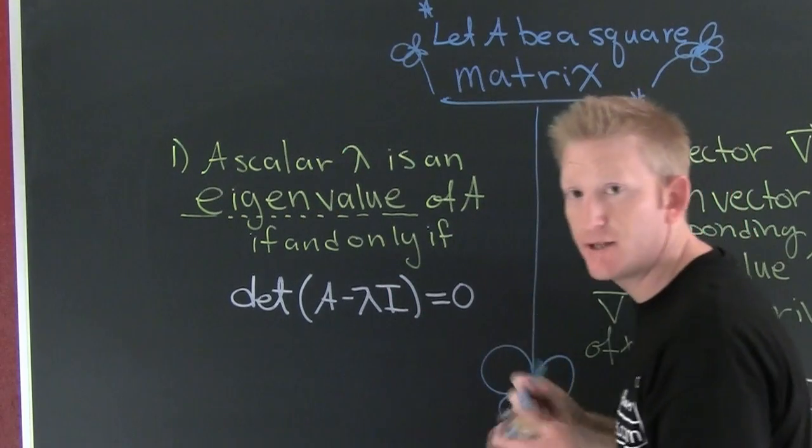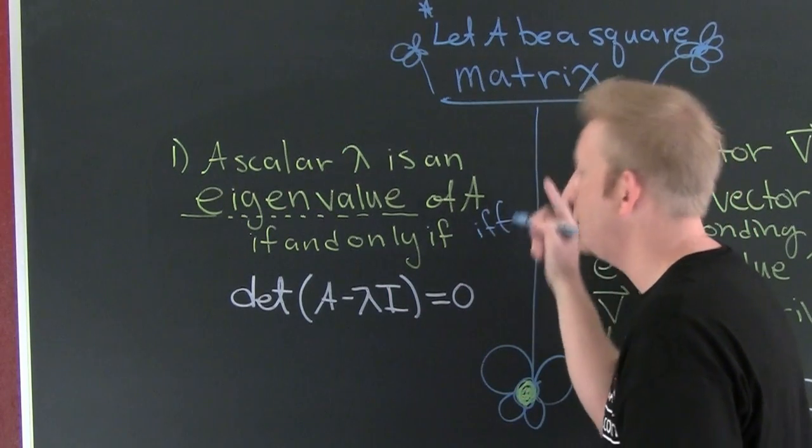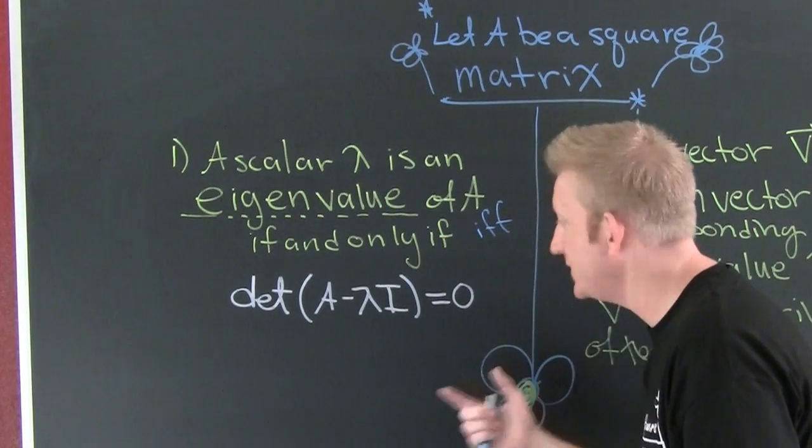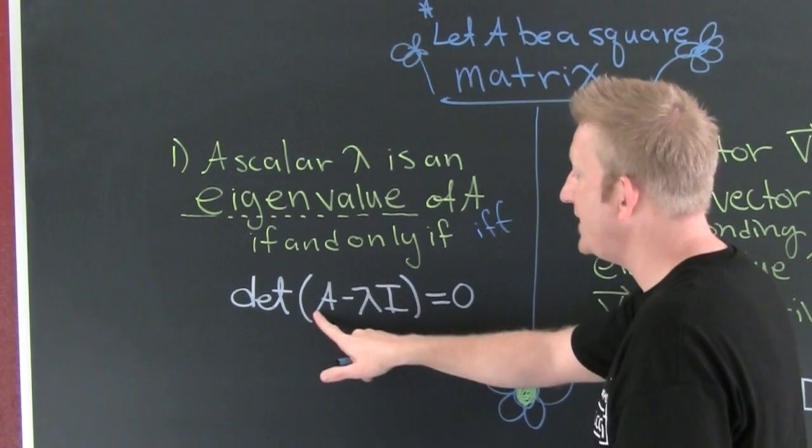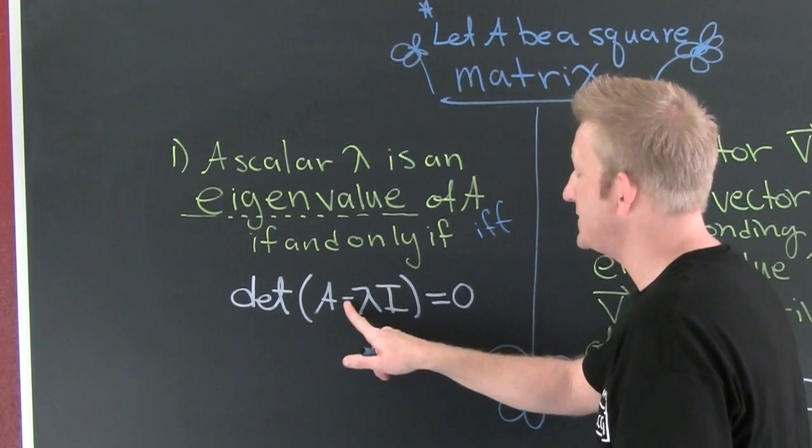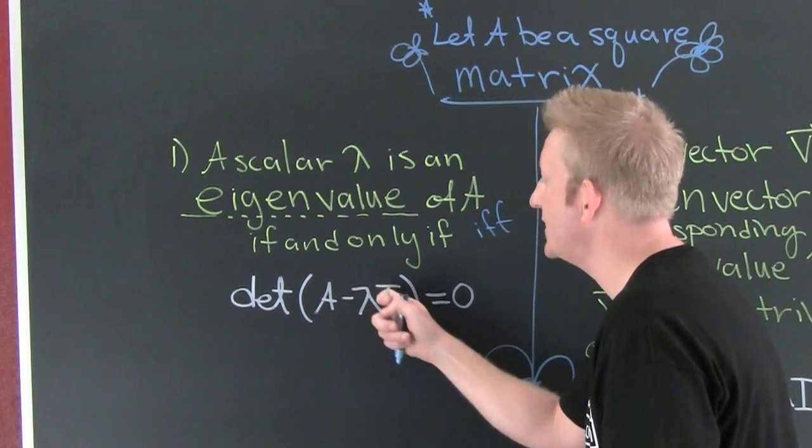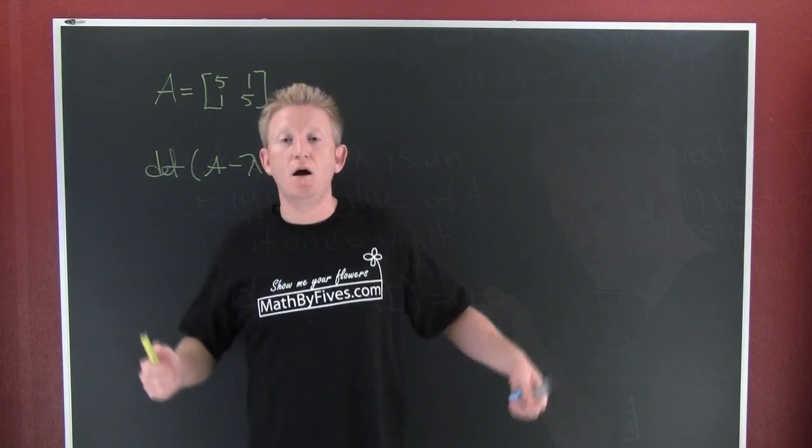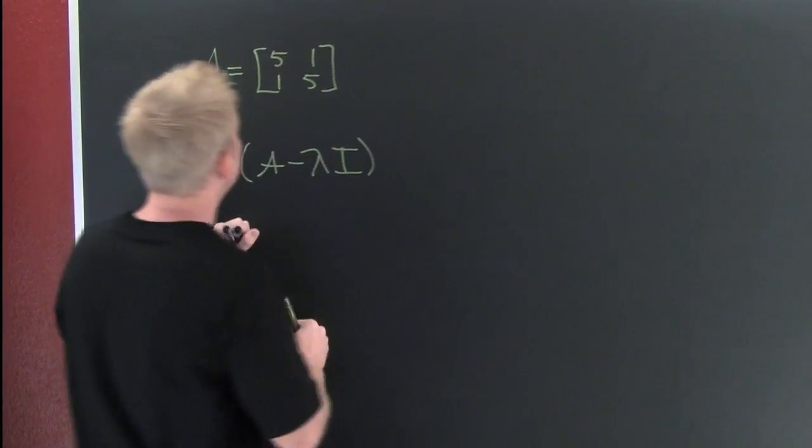Sometimes people abbreviate if and only if as IFF. That means it goes both ways - it's a bi-conditional. The determinant of your matrix A minus lambda, the scalar times the identity matrix of the same size, is equal to zero. Okay, let's go ahead and proceed with this example.